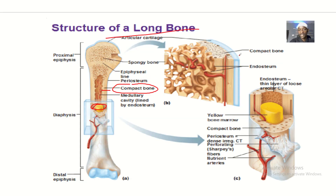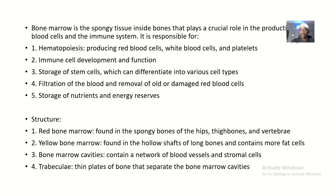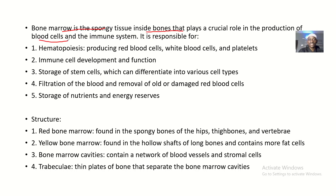Looking at the structure of a long bone, the bone marrow is located centrally. If you have yellow bone marrow, that's in adults; and red bone marrow, that's in infants. So the bone marrow is the spongy tissue inside the bones that plays a crucial role in the production of blood cells and the immune system. It is responsible, first of all, for hematopoiesis — that's the production of red blood cells, white blood cells, and platelets — and also immune cell development and function.